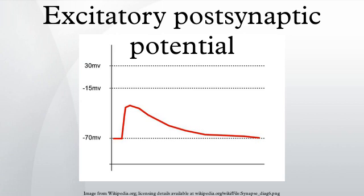The neurotransmitter most often associated with EPSPs is the amino acid glutamate, and it is the main excitatory neurotransmitter in the central nervous system of vertebrates. Its ubiquity at excitatory synapses has led to it being called the excitatory neurotransmitter. In some invertebrates, glutamate is the main excitatory transmitter at the neuromuscular junction. In the neuromuscular junction of vertebrates, EPPs are mediated by the neurotransmitter acetylcholine, which is one of the primary transmitters in the central nervous system of invertebrates.